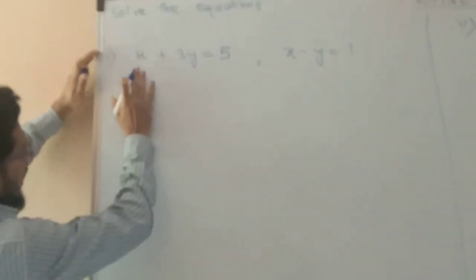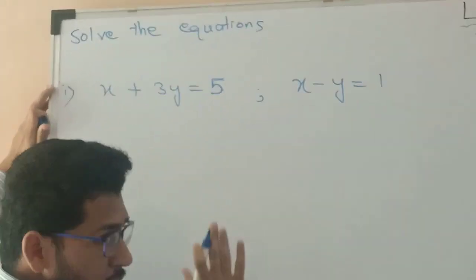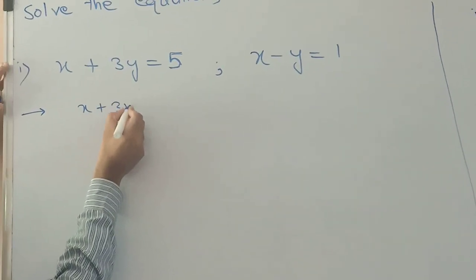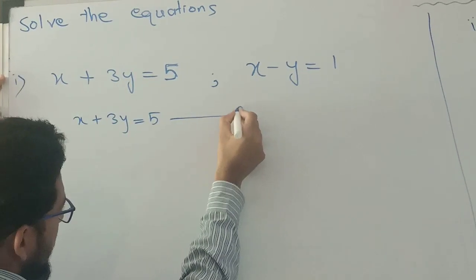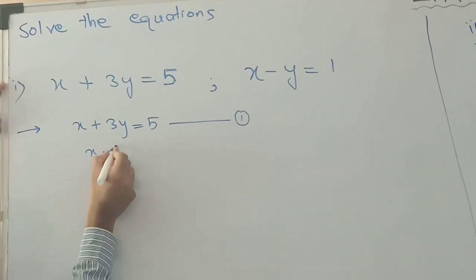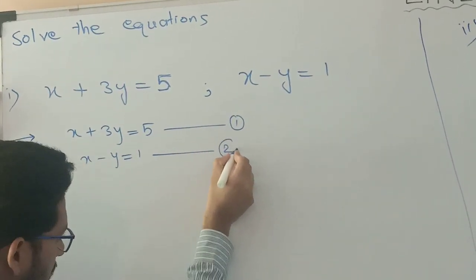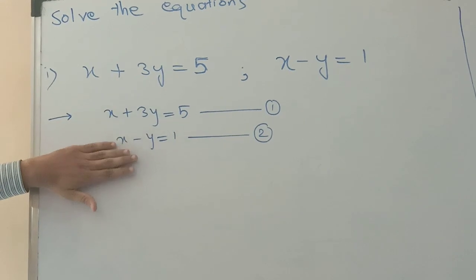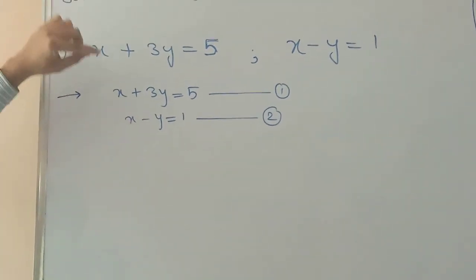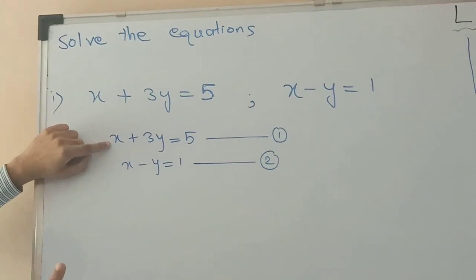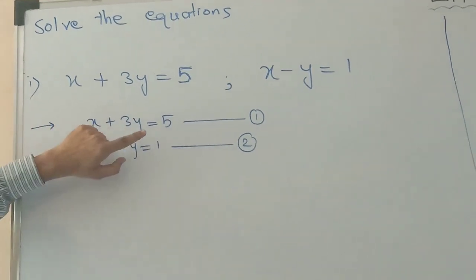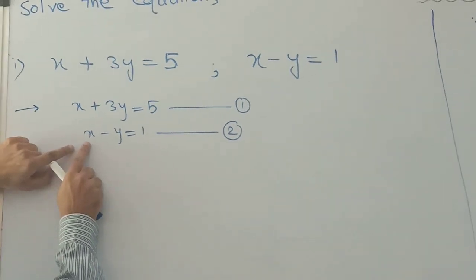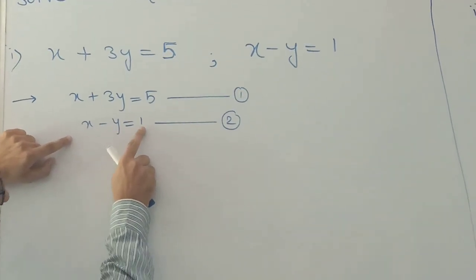The first equation is x plus 3y equals to 5, and x minus y equals to 1. We will call this as equation number 1 and the other as equation number 2. The coefficient of x is 1, the coefficient of y is 3, and the constant is 5 in equation 1. In equation 2, the coefficient of x is 1, the coefficient of y is minus 1, and the constant is 1.